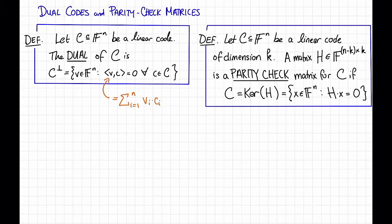So suppose we have a linear code C, subset of f to the n, of dimension k. We say that a matrix H in f to the (n minus k) by k is a parity check matrix for the code C if C is equal to the kernel of H, or equivalently if C is the set of vectors so that H times x is equal to zero.